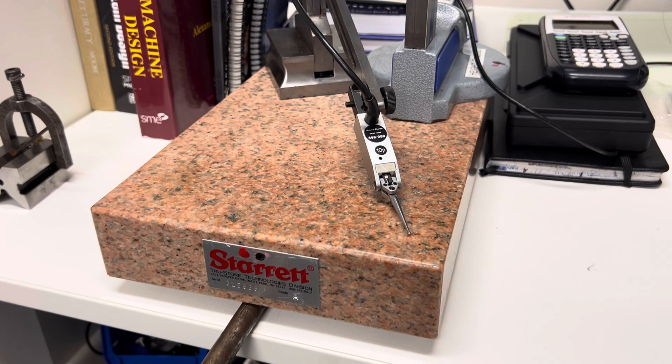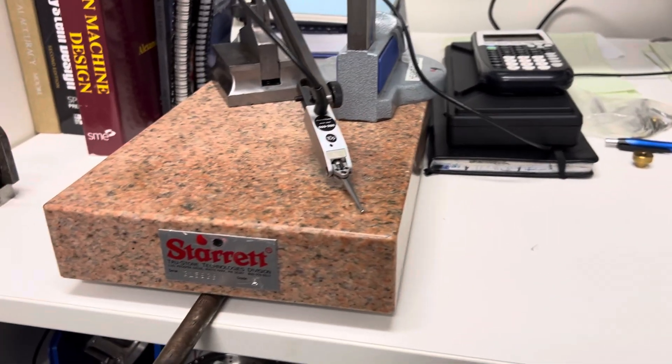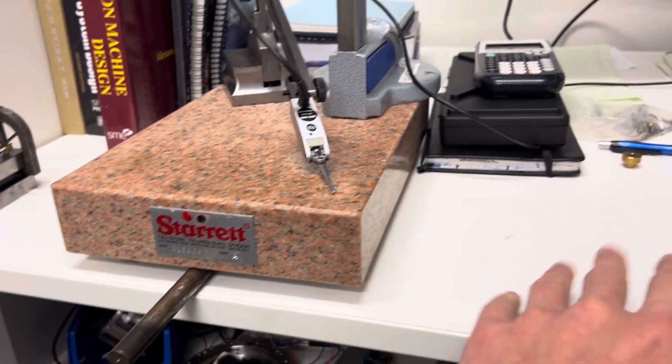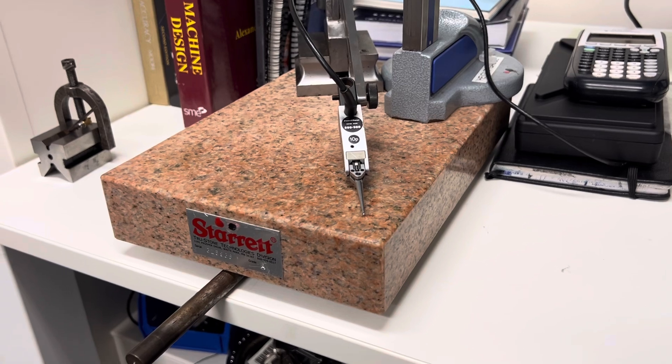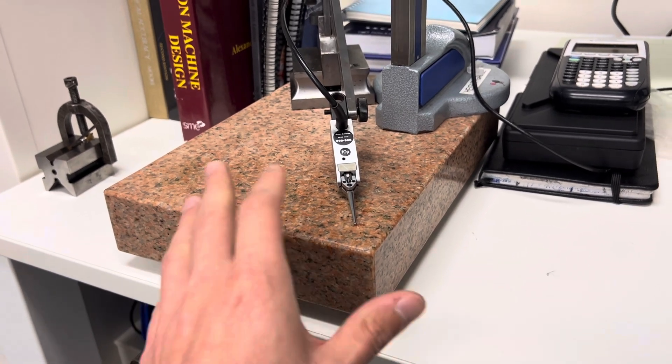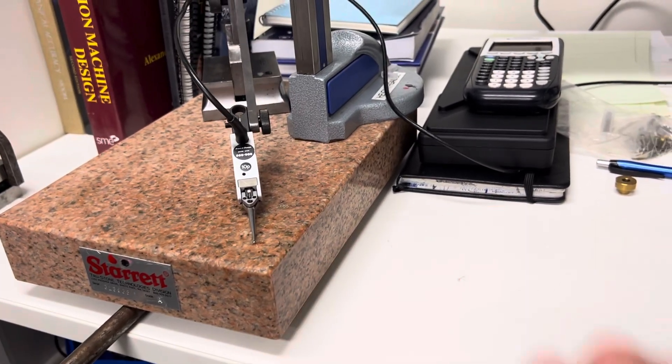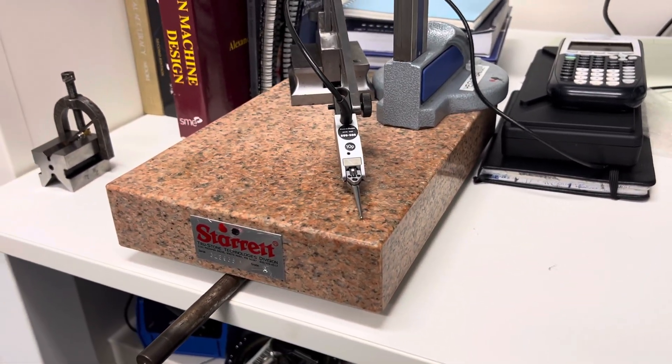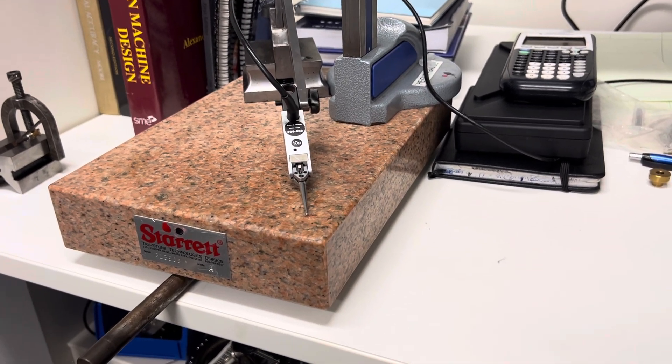So, kind of a neat little demo there. Just showing that kinematic support and exact constraint, it's not just for locating, it's super important for a lot of aspects of machine design. And here you can see why exact location of a machine base helps for reducing sensitivity to your foundation.